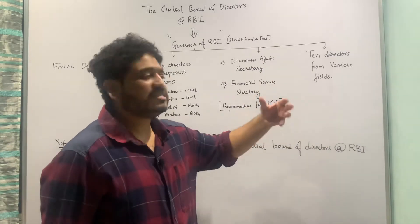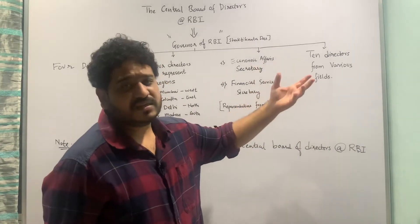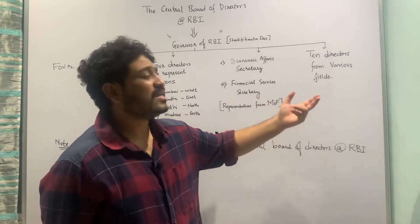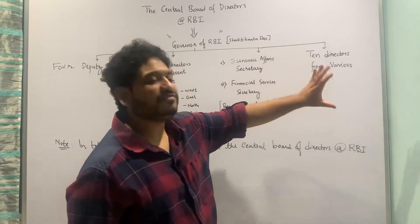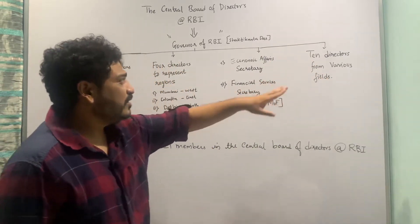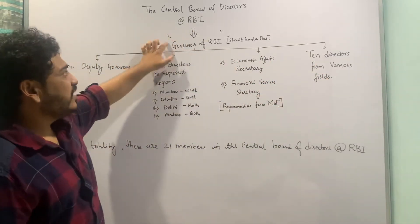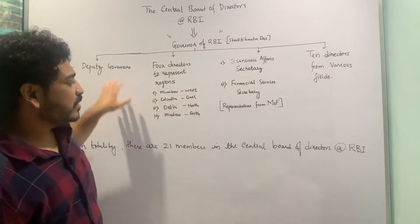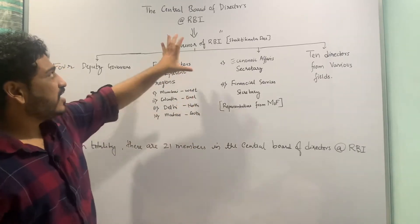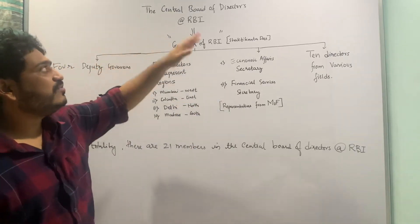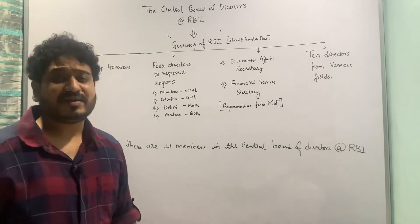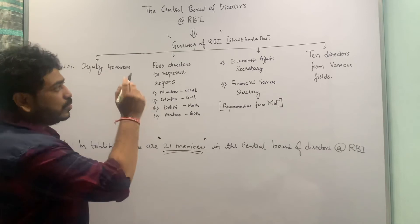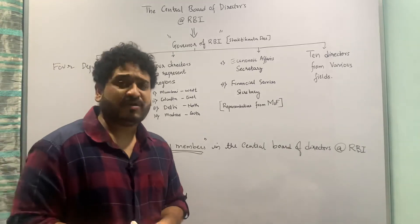These 10 directors can be from Agriculture, they can be economists, they can be from public sector banks, and various other combinations. So if we sum this up: 1 plus 4 plus 4 plus 4 plus 2 and 10 — this all comes to 21. So the Central Board of Directors of the Reserve Bank of India effectively consists of 21 members who are there to look after the monetary and fiscal system of the country.